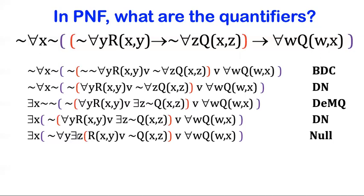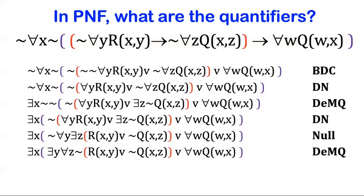It would be incorrect. It would be an invalid inference or an invalid equivalence in order to move them past that negation symbol. So once I move them both here, again, I need to push this past them before I can move them further on this other disjunction. So this is why I applied DeMorgan's for quantifiers again.